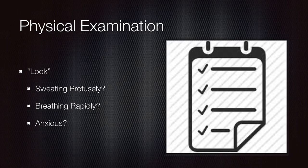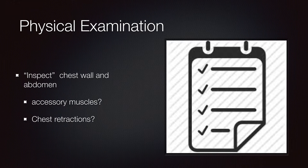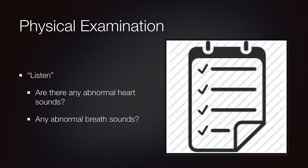The physical examination is important after taking a history. You want to look at the patient and get a general understanding of their appearance. Are they sweating profusely — meaning diaphoretic? Are they breathing rapidly, or tachypneic? Are they anxious? The physical examination will also include inspecting the chest wall, checking for accessory muscle use and chest retractions, and listening for abnormal heart sounds or abnormal breath sounds.